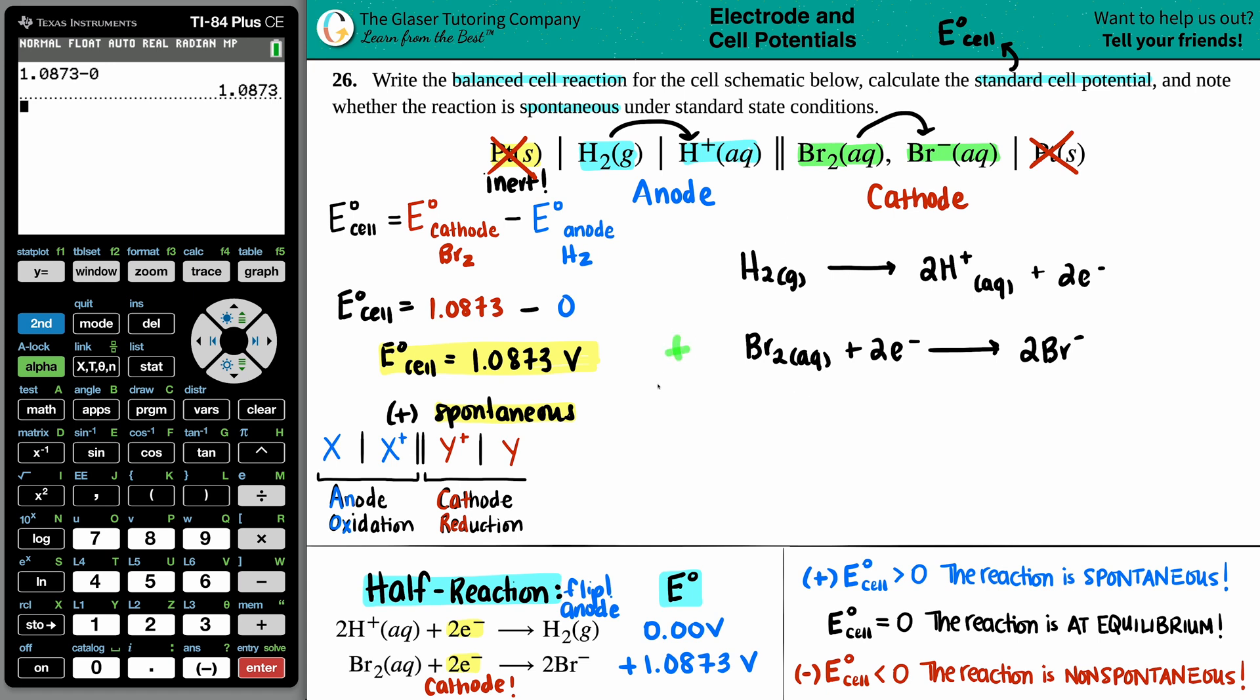Now, in order to add these up, those electrons have to be the same. But look, they already are. Two electrons, two electrons. So I'm all ready to add this reaction up. The electrons are going to cancel. And anything that's on the left side stays on the left side. Anything that's on the right side stays on the right side. So we have H2 gas plus Br2 aqueous, and that will yield 2H+ aqueous plus 2Br minus aqueous. And we are done.